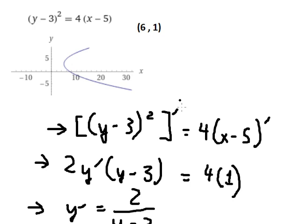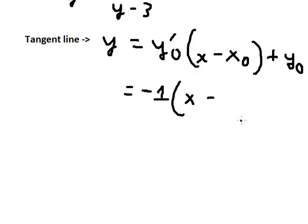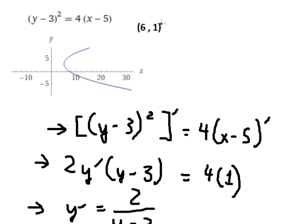We put 1 in here so we can find the value. We have negative 1. This is for the point (6, 1).